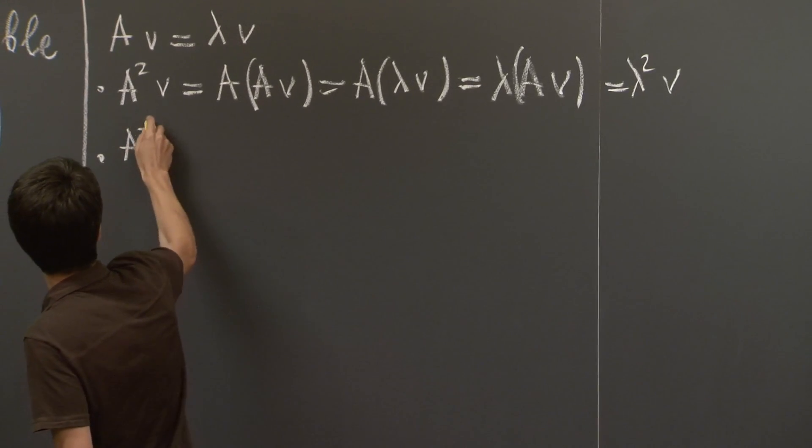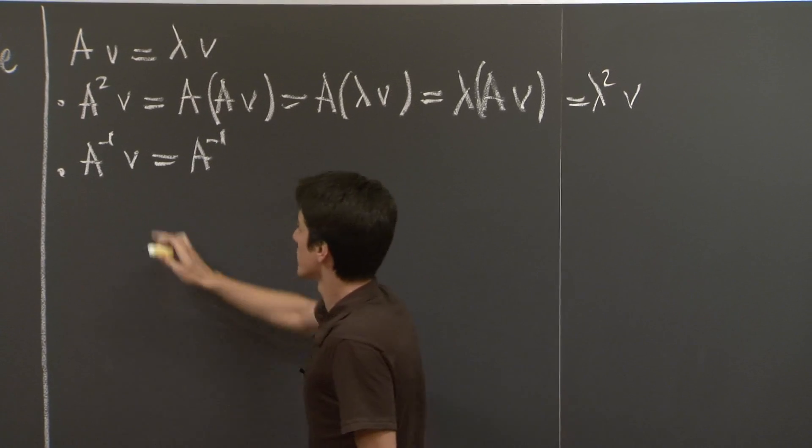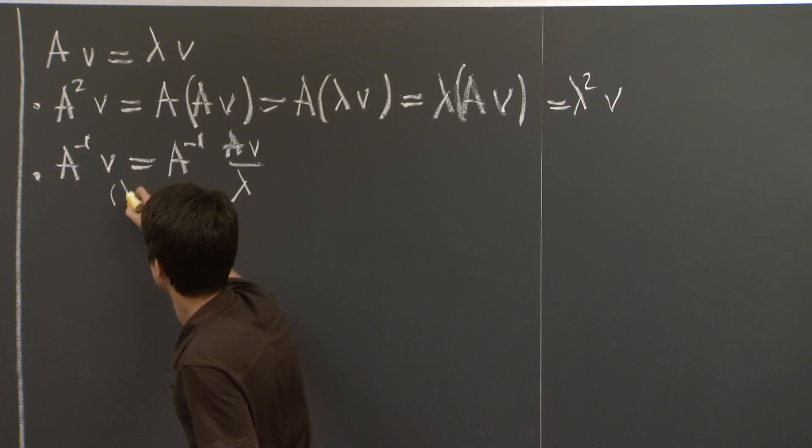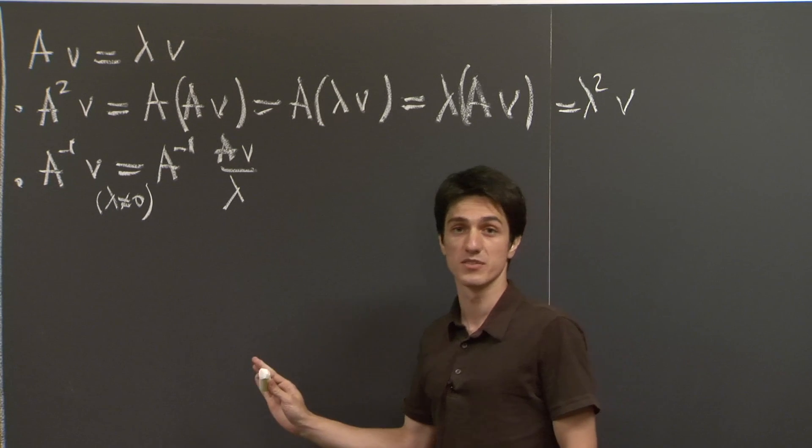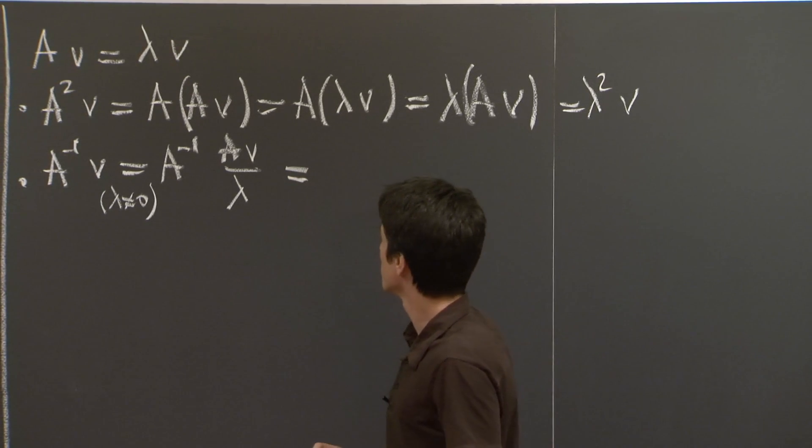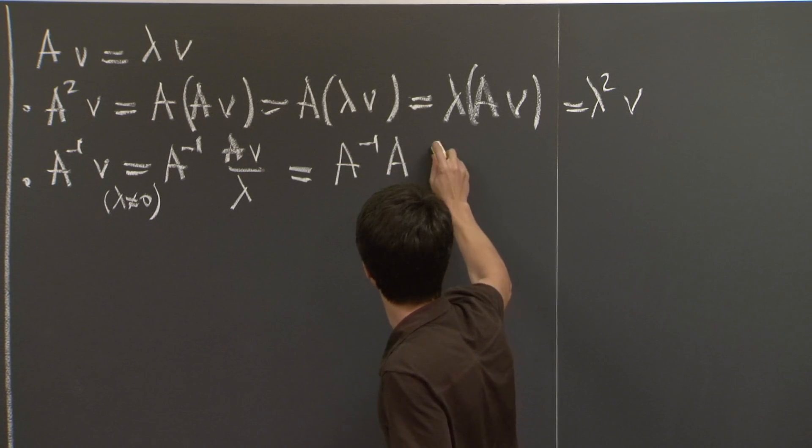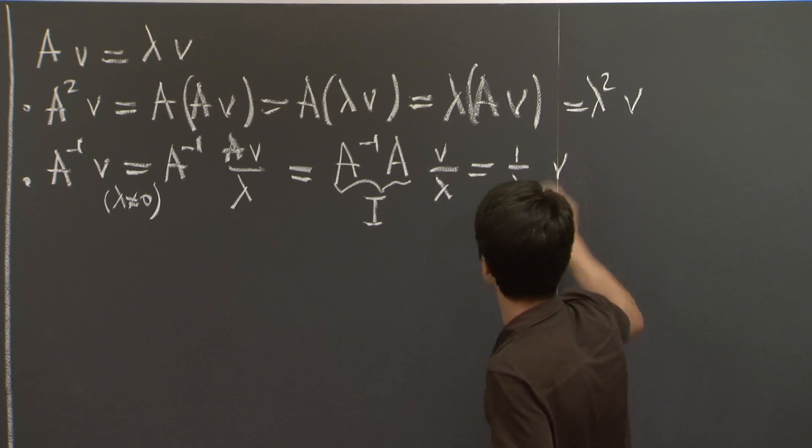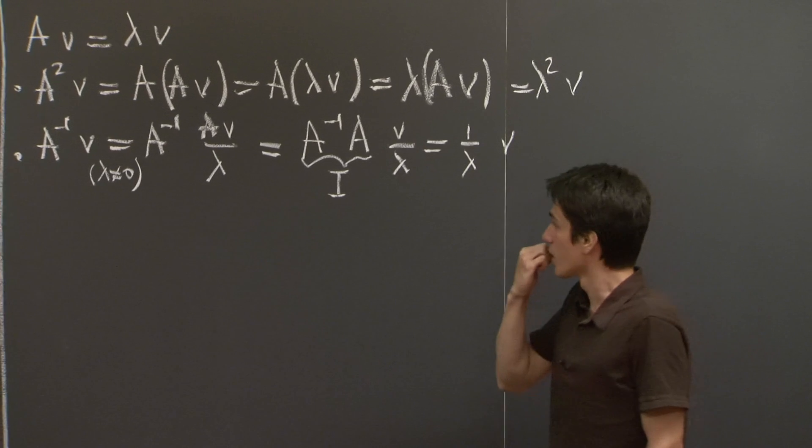Similarly, if we hit V with A inverse, so in this case we can write V as A V over lambda, given that, of course, lambda is non-zero. But the eigenvalues of an invertible matrix are always non-zero, which is an exercise you should do yourself. So if we just then take out the A and combine it with A inverse, this is the identity, and so we get 1 over lambda V. So V is also an eigenvector for A inverse, with eigenvalue, the reciprocal of lambda.